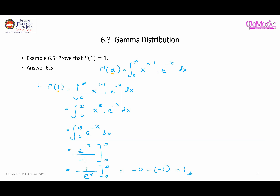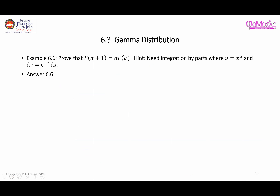Next, we're going to prove that gamma of alpha plus one equals alpha times gamma of alpha. For this, you need to apply integration by parts, where you let u equal x to the alpha and dv equal e to the negative x dx. The basic definition of gamma function is the integral from zero to infinity of x to the alpha minus one times e to the negative x.